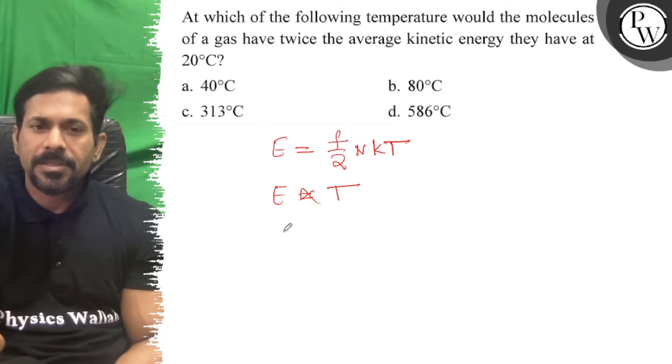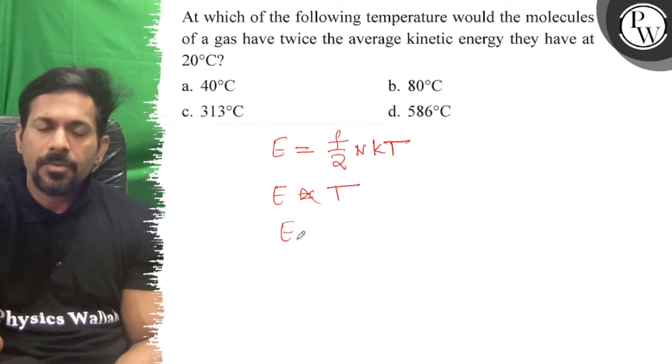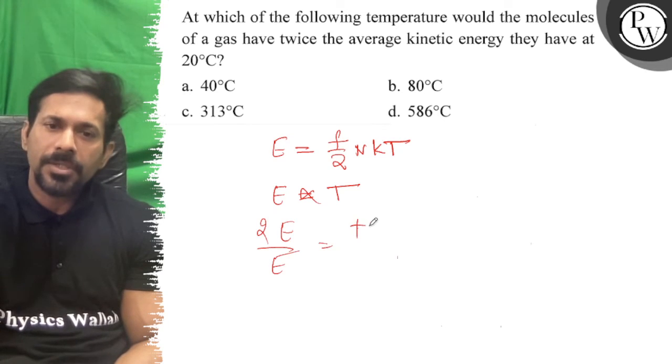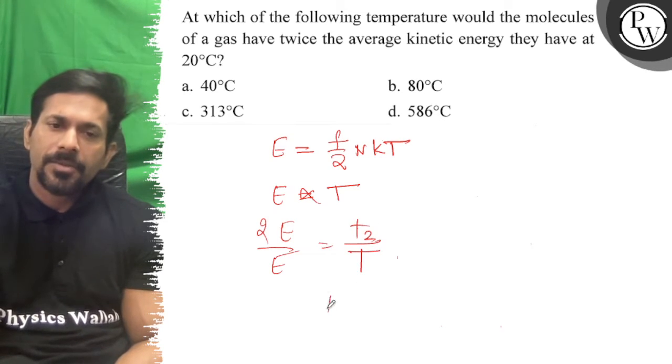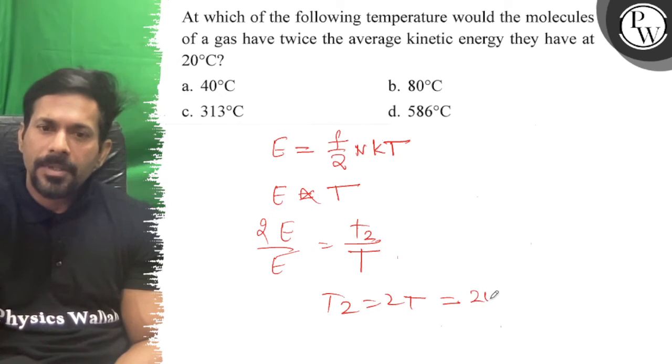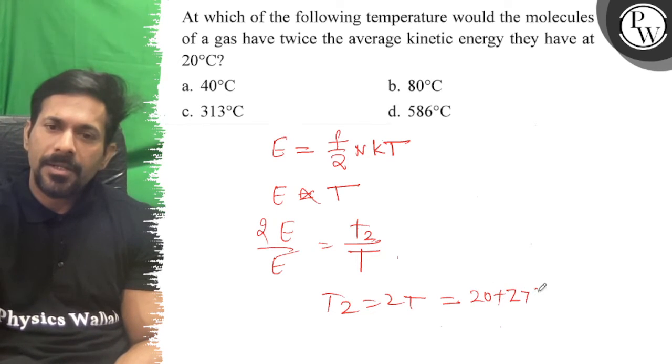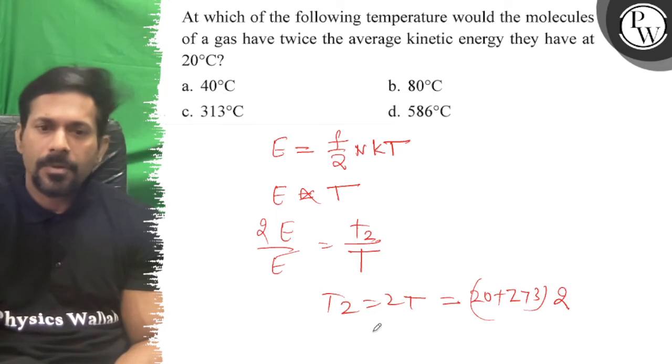So at 20 degrees Celsius, E2, kinetic energy twice of E divided by E is equal to T2 upon T. T2 is equal to 2T, which is 2 times (20 plus 273). T2 equals...